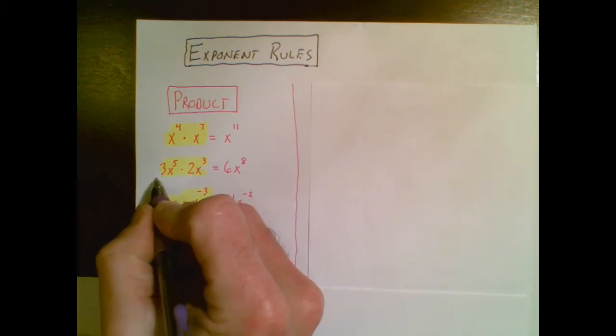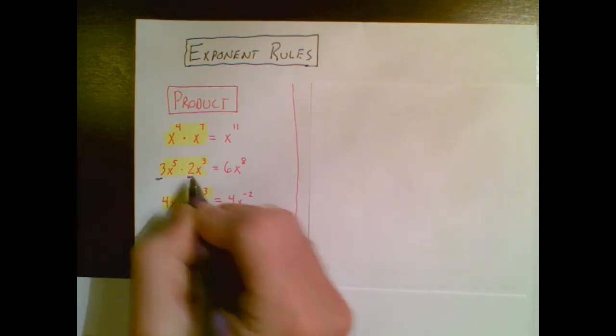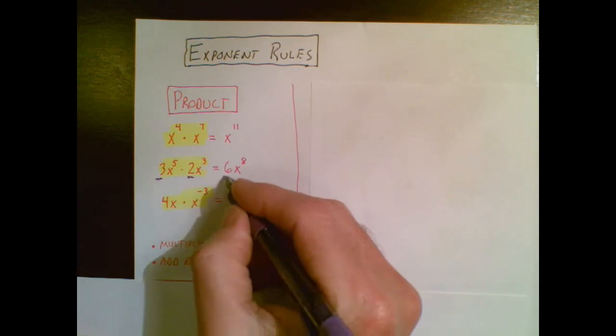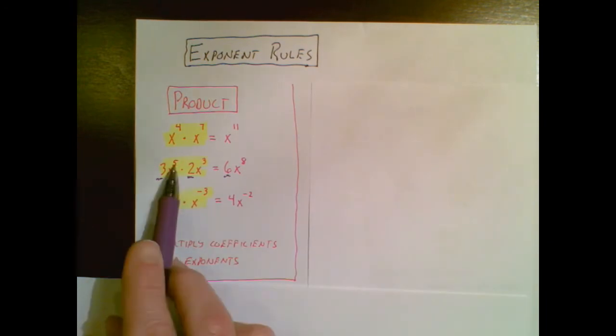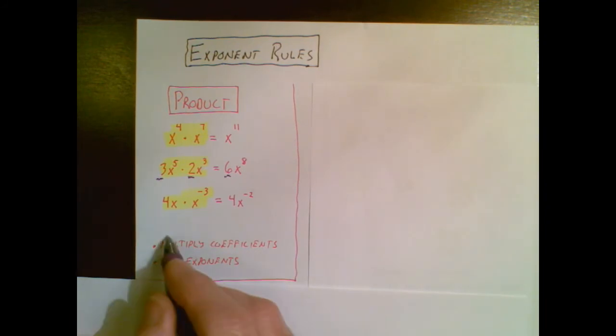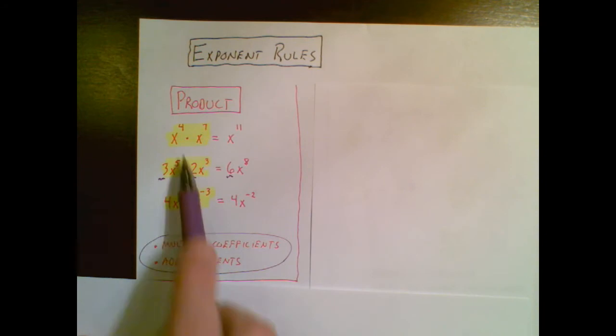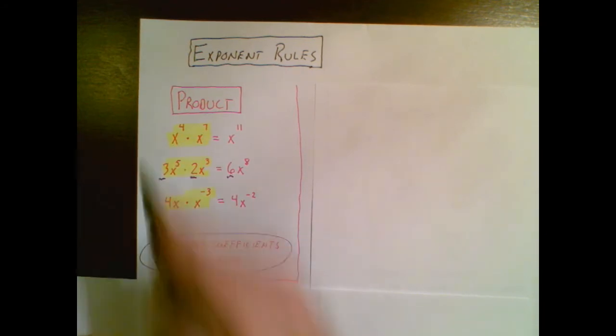I'll walk you through one. I've got two coefficients 3 and 2. I multiply the coefficients to get 6. I've got an exponent of 5 and an exponent of 3. 5 plus 3 is 8. So you have to multiply your coefficients and add your exponents. You'll see that the same thing is happening on these two.